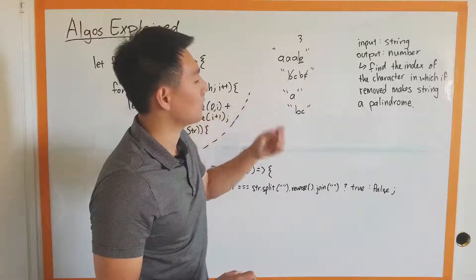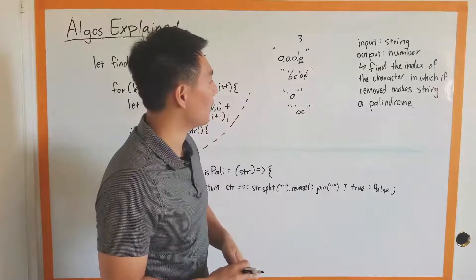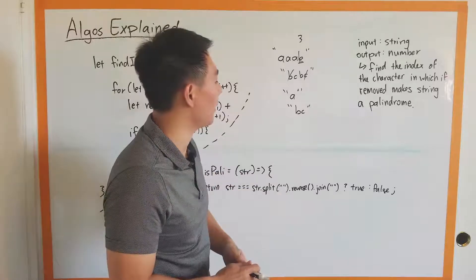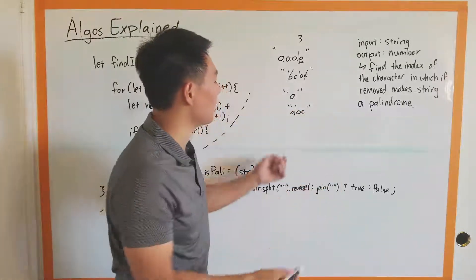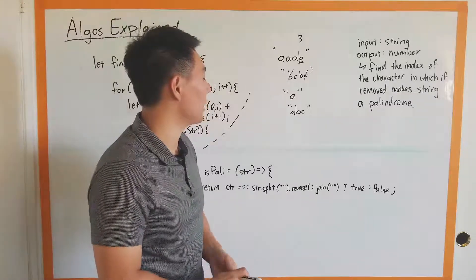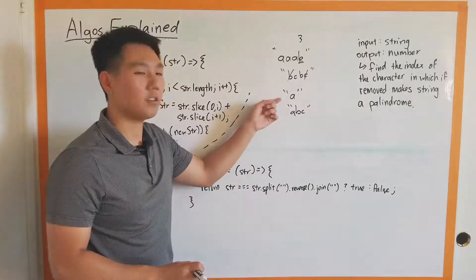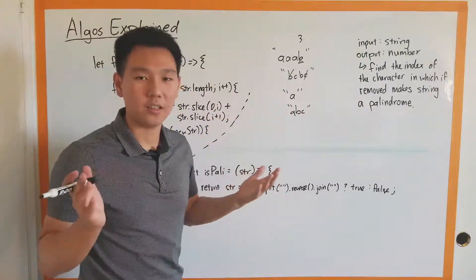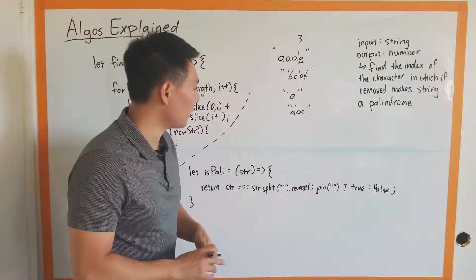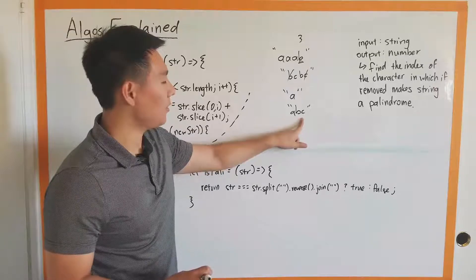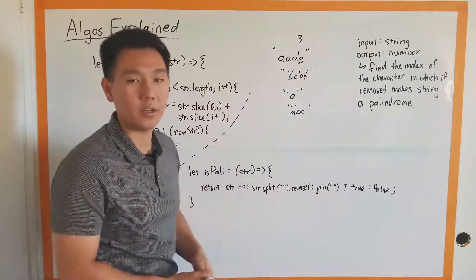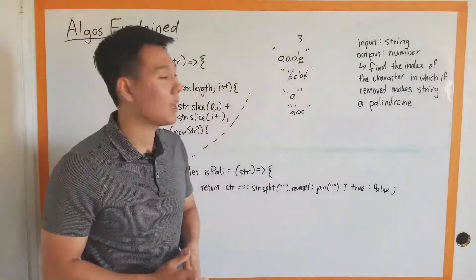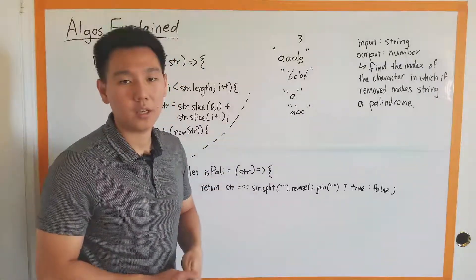We decided single letters are considered palindromes in our case. But if it's like A, B, C or something, then you wouldn't be able to make it a palindrome by removing one character. In cases like this you would return negative one. If you got a null string, you'd probably return negative one also.